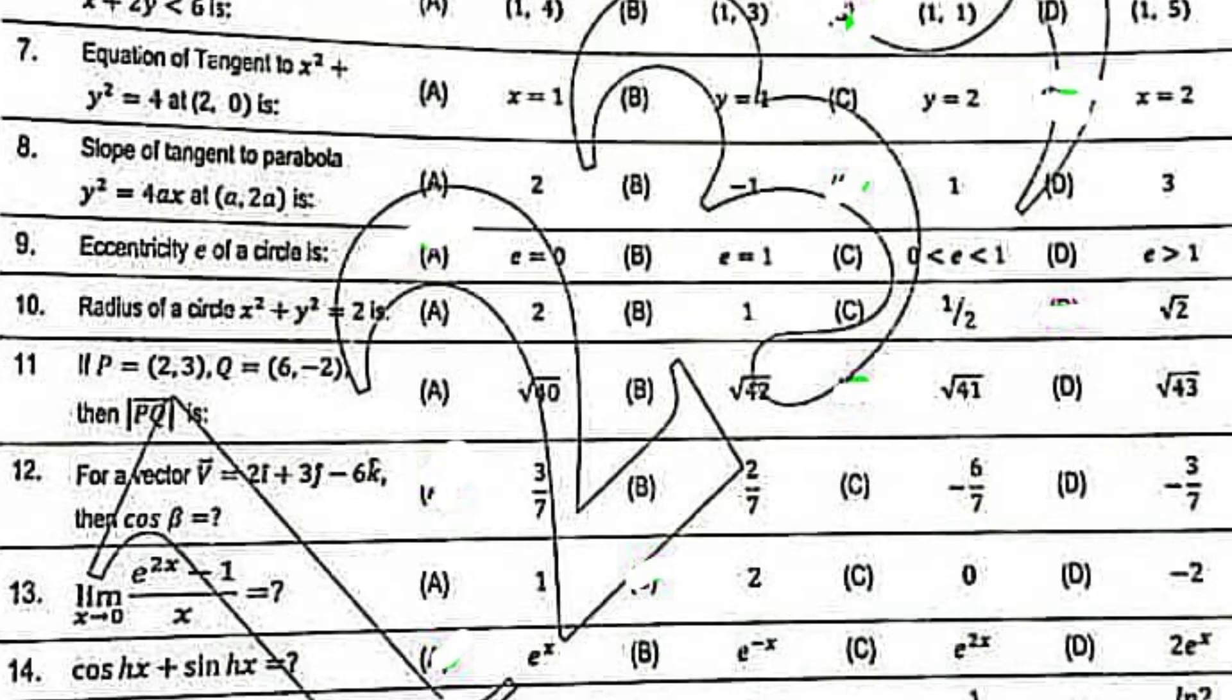Equation of tangent 2x square plus y square equal to 4 at 2, 0 is x equal to 2. Slope of tangent to parabola y square equal to 4ax at a, a is 1. Eccentricity of a circle is e equal to 0.